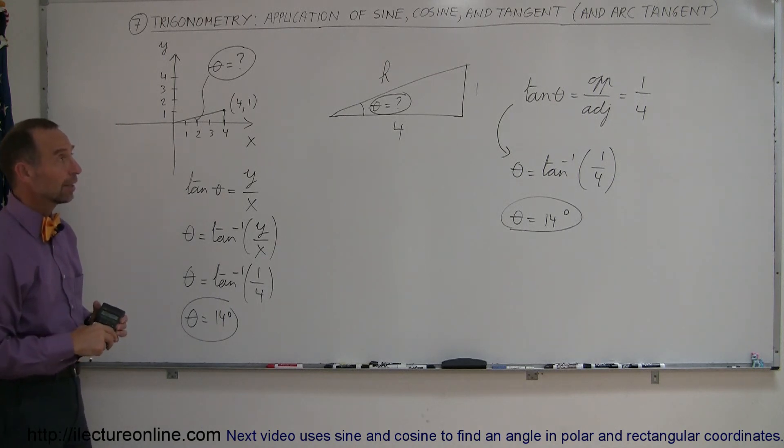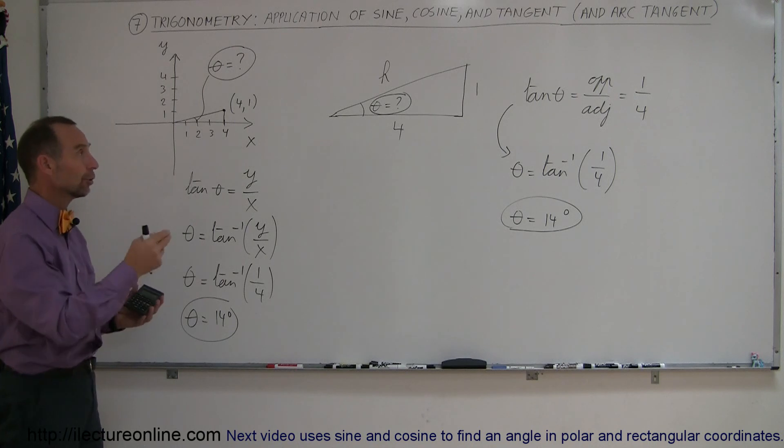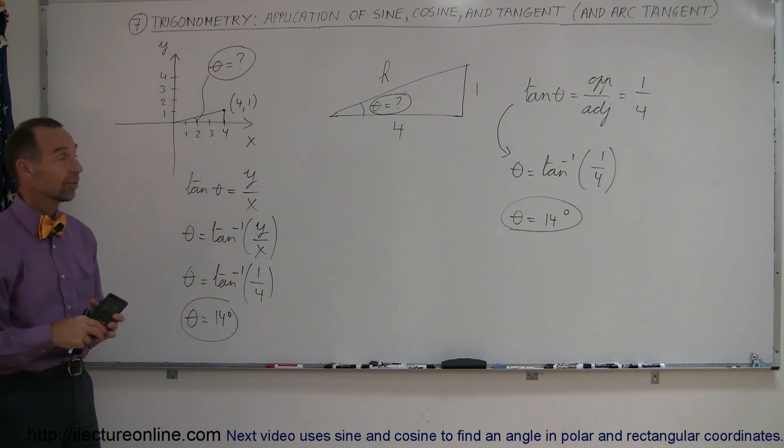So, fairly straightforward, arctangent is really handy in order for you to find an angle if you know the opposite and the adjacent side of the triangle.